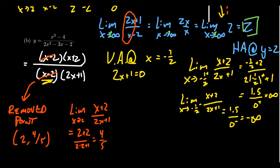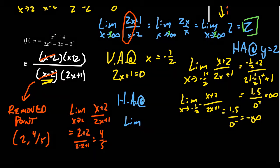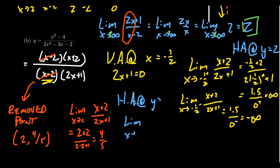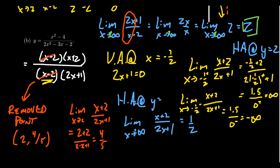For the horizontal asymptote, we take the limit as x approaches infinity of x plus 2 over 2x plus 1. This is a balanced rational function — same degree numerator and denominator — so the limit is 1 half. This is the same whether we approach positive or negative infinity. For rational functions, if a horizontal asymptote exists, it is the same on both sides, though with other functions like those involving square roots, the left and right horizontal asymptotes can differ.